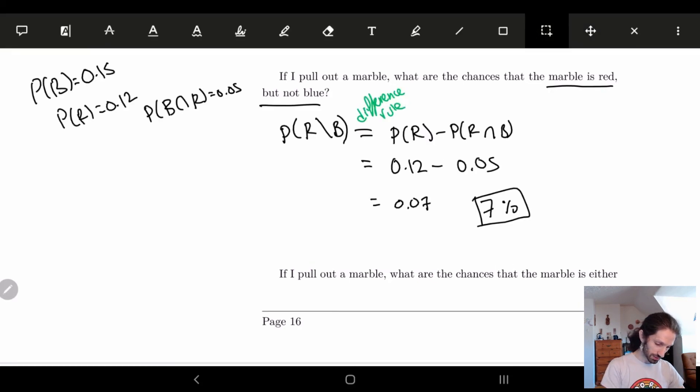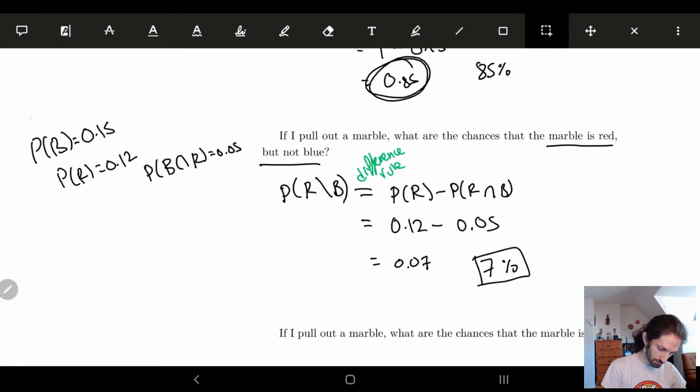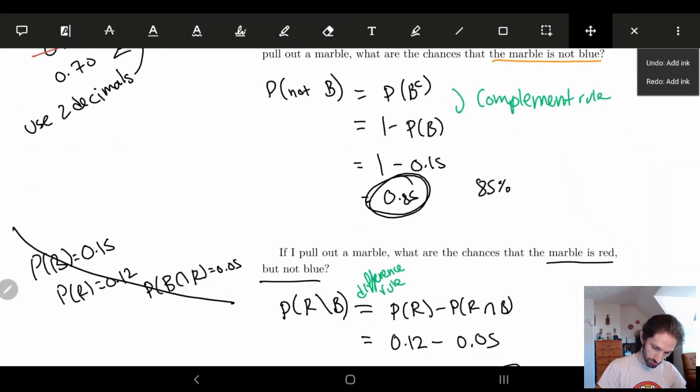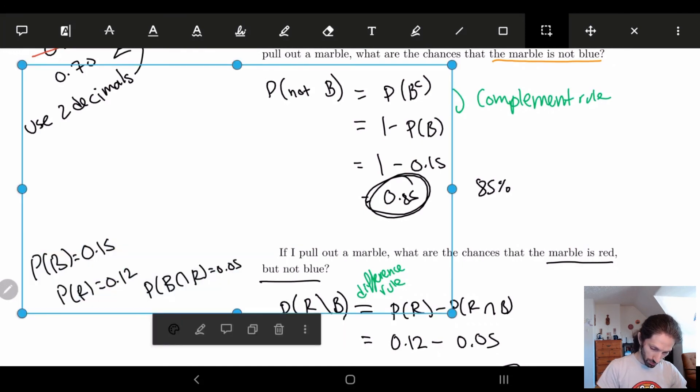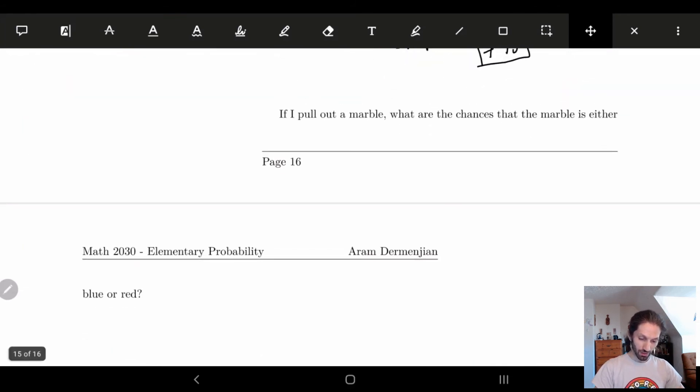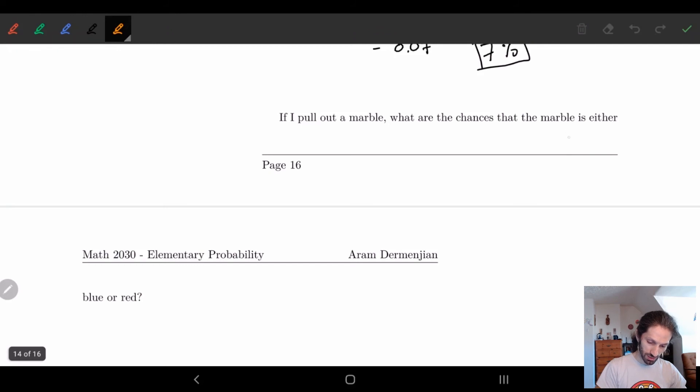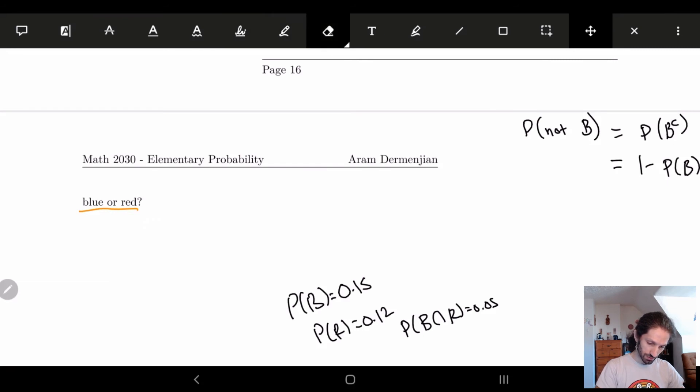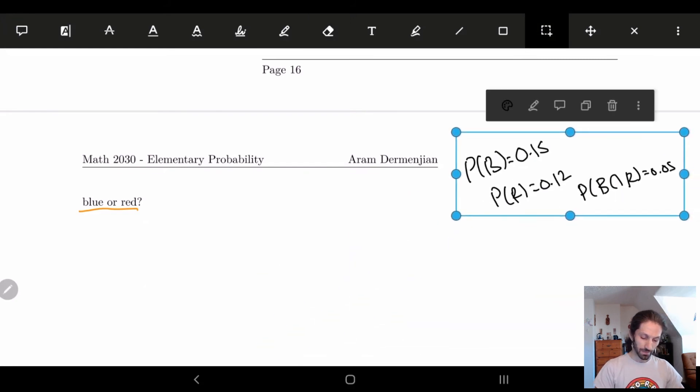And we're going to copy this because I think we're going to need it on another page. We're going to copy all this and figure it out later. So one more question we're going to ask the following. We're going to say, what are the chances that the marble is either blue or red? So what does this mean? So first what we're going to do is I'm going to paste my probabilities. So we're going to delete some of these.